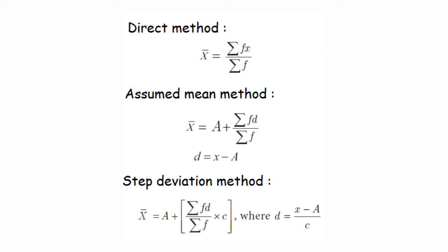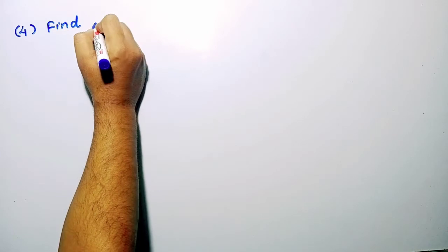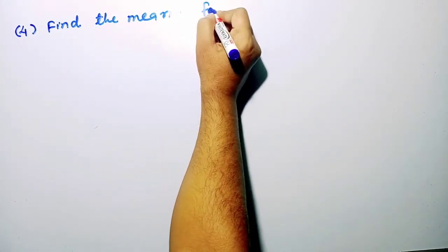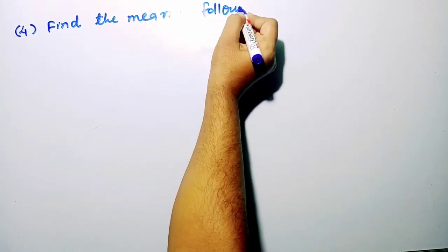There are a few methods to find the mean for grouped data. The direct method: x̄ = Σ(fi·xi) / Σfi. The assumed mean method: x̄ = a + Σ(fi·di) / n. The step deviation method: x̄ = a + [Σ(fi·ui) / n] × c. Let us see the applications of these formulas.